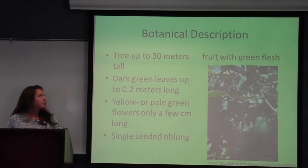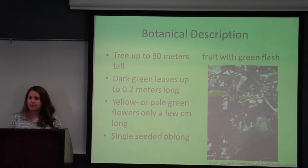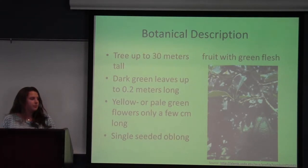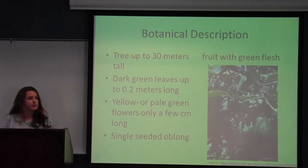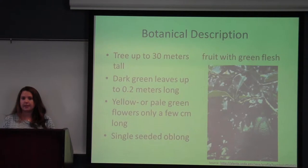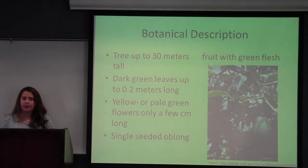So a brief botanical description: there are six species in the Persea genus, and the one that we commonly consume is Persea Americana, and it has nine subspecies, three of which are domesticated and are commonly known as the West Indian, Guatemalan, and Mexican varieties of avocado.